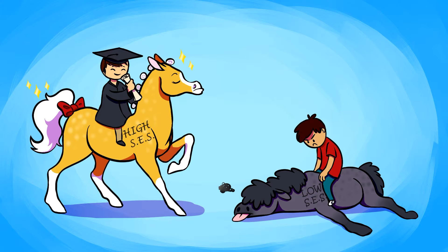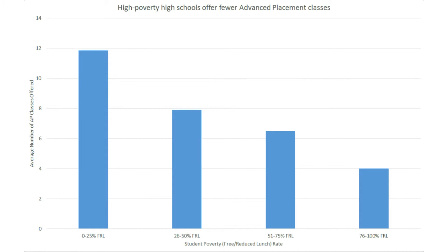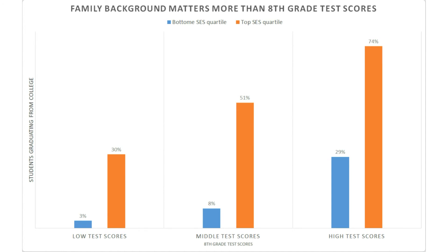SES varies throughout the population and affects many things throughout one's education. One of the greatest indicators of future college success is whether a student has taken any advanced placement courses in high school. As this graph shows, schools in higher poverty areas tend to offer fewer AP courses, limiting the number of students who can take them. Although students in all income brackets have seen gradual growth in obtaining a degree, the divide has been growing rapidly between income brackets. A student's SES is an even greater indicator of future success than test scores. Even the highest scoring students from the lowest SES quartile are less likely to graduate from college than the lowest scoring students from the top SES quartile.